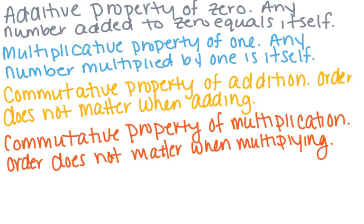Lesson summary: The additive property of 0 means that any number added to 0 is going to equal itself. The multiplicative property of 1 means any number multiplied by 1 is itself. The commutative property of addition means order does not matter when adding. And the commutative property of multiplication means order does not matter when multiplying. Now go complete the problem set.